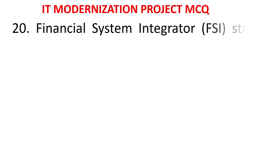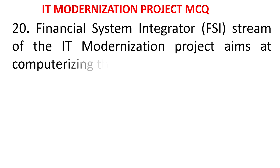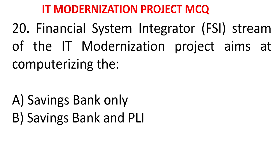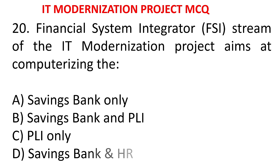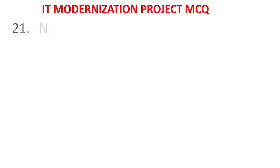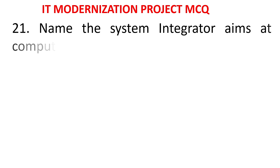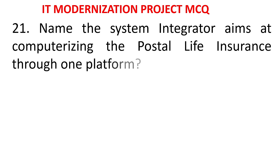MCQ 19: The financial services system integrator (FSI) stream of IT modernization project aims at computerizing - A) savings bank only, B) savings bank and PLI, C) PLI only, D) savings bank and HR. The answer is savings bank and PLI. FSI covers both savings bank and PLI computerization. MCQ 20: Name the system integrator that aims at computerizing PLI through an online platform - CIS, FSI, CSI, or RSI. The answer is FSI - financial services system integrator.